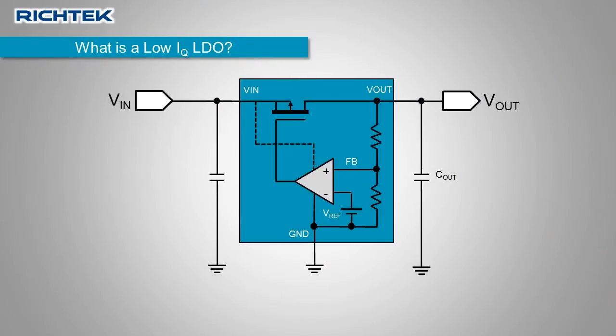LDO IQ or LDO quiescent current is the current that is consumed by the IC internal feedback control and drive circuits. It is normally measured by measuring the current that flows out of the LDO ground pin.